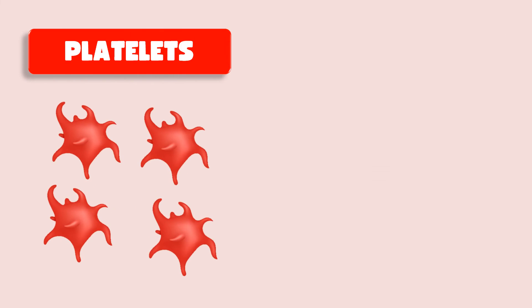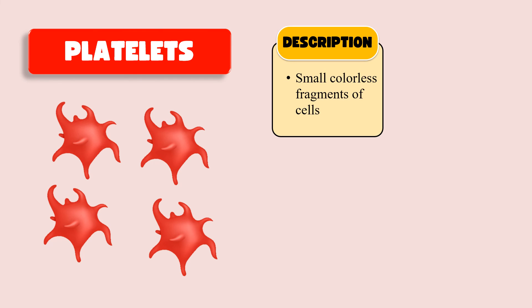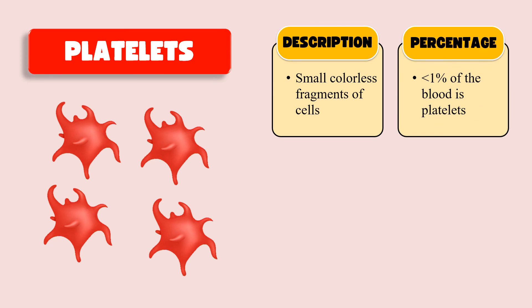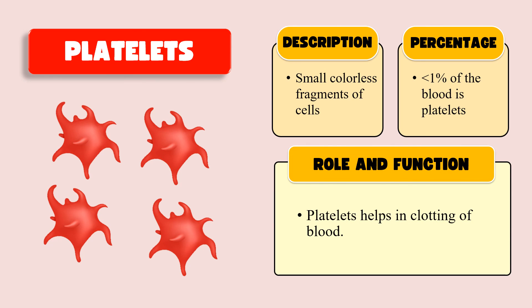The next component of the blood is platelets. These are small colorless fragments of cells and they are present in less than one percent of the blood. As far as their role is concerned, they are required for the clotting of blood — whenever we get any kind of injury, these platelets help to stop the bleeding by helping in the clotting of blood. They are also made in the bone marrow. So this was all about the basic four components of the blood. That's all for today, see you in the next video.